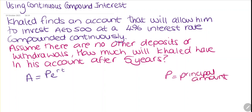In our question, the principal amount is going to be the amount we invested, so this is going to be 500 dirhams. The rate needs to be in decimal, so if we divide by 100, we'll have 0.04. So this is going to be our rate.